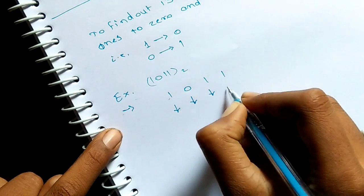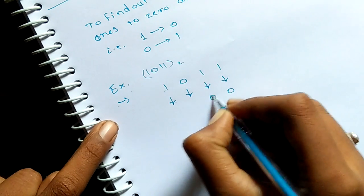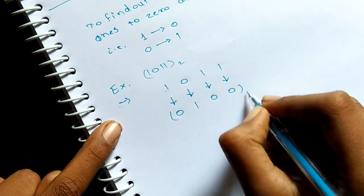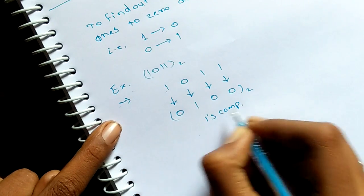Then convert these numbers. All ones are converted into zero and all zeros are converted into one. That is the answer, the first complement.